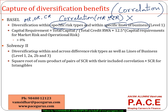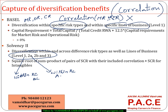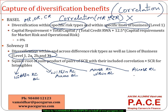In the case of Solvency 2, level one, level two A, two B, and three risks are addressed. Level one is only within risk category and within business lines. Two A is within risk category but across business lines. Two B is across risk categories within business lines. And finally, level three is across all risk categories and across all business lines.